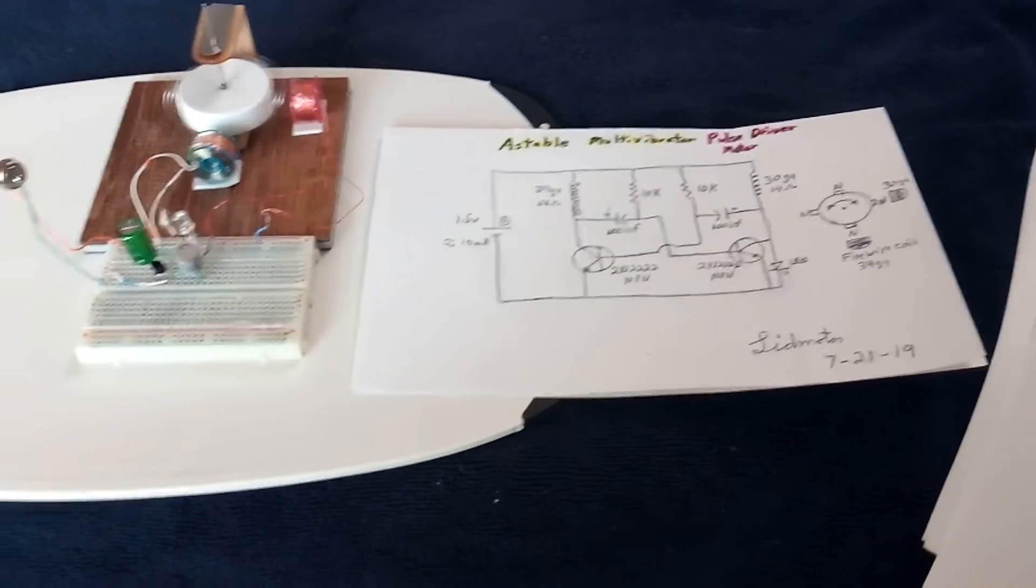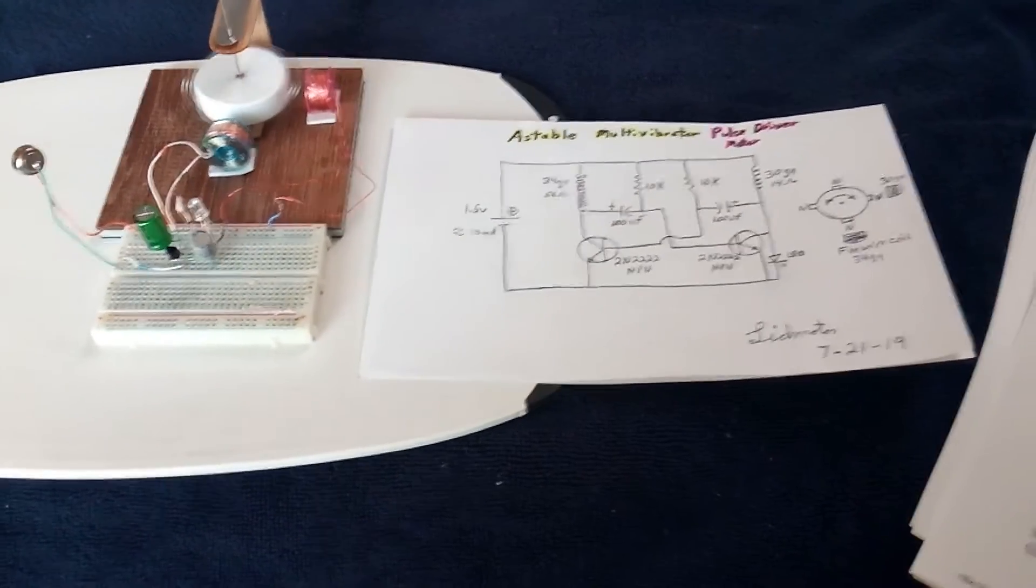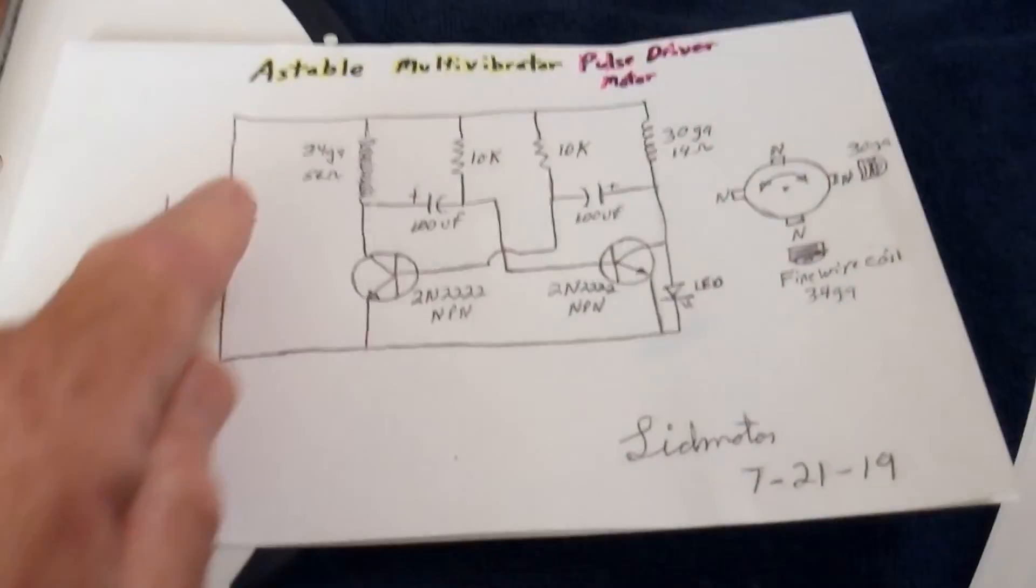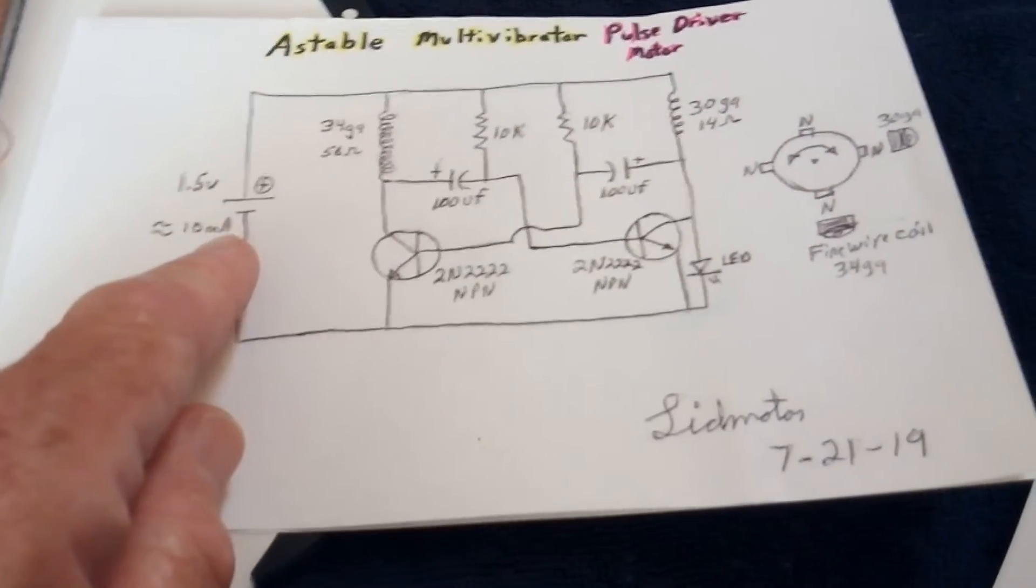And it took forever to get this from Taiwan or wherever they sent this from. But anyway, this is an astable multivibrator pulse driver circuit that I have not seen before. And this particular one I've got is around about 10 milliamps and a volt and a half.